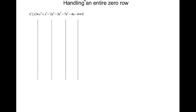Let's look at a more complicated case when an entire row in the Routh table goes to zero. We have the characteristic equation: s^6 + s^5 - 2s^4 - 3s^3 - 7s^2 - 4s - 4 = 0.